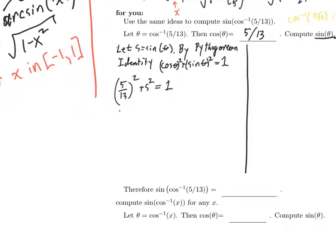s squared is equal to 1, which is 13 squared over 13 squared, minus 5 squared over 13 squared equals 13 squared minus 5 squared over 13 squared.